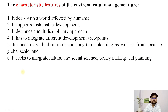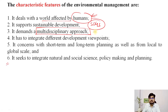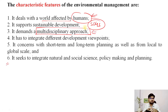The characteristics and features of environmental management include six key points. It deals with a world affected by humans — purely anthropocentric. It supports sustainable development, referring to the SDGs. It demands a multi-disciplinary approach: not just one subject or discipline is responsible for management; knowledge must come from geography, sociology, anthropology, and the sciences together. That's why it is an umbrella concept — multi-disciplinary approach is key to solving environmental issues and challenges.